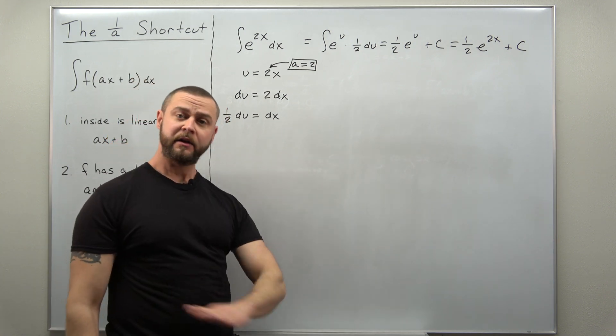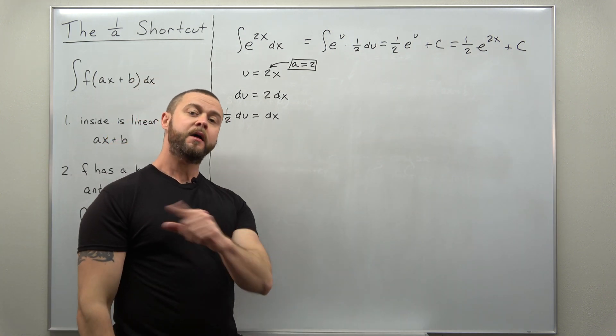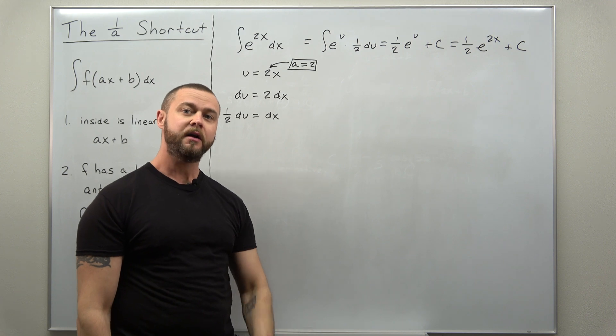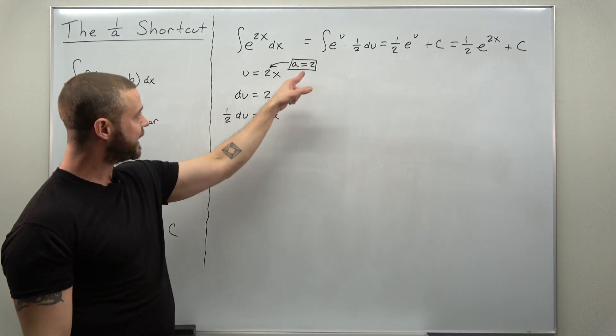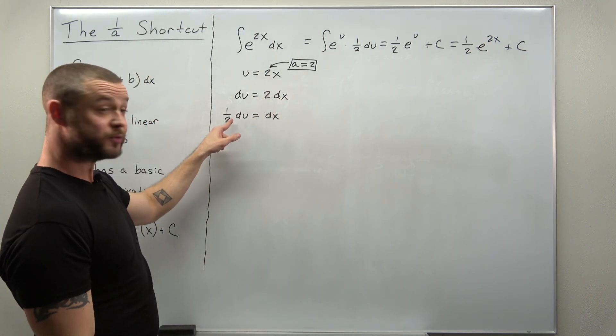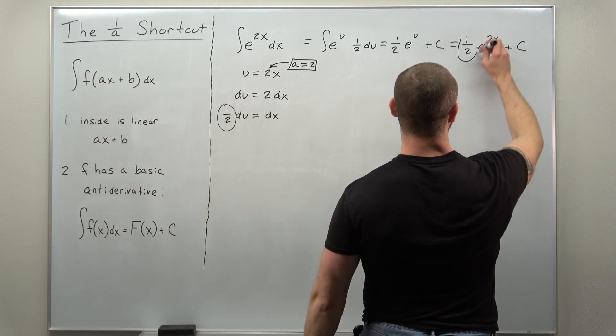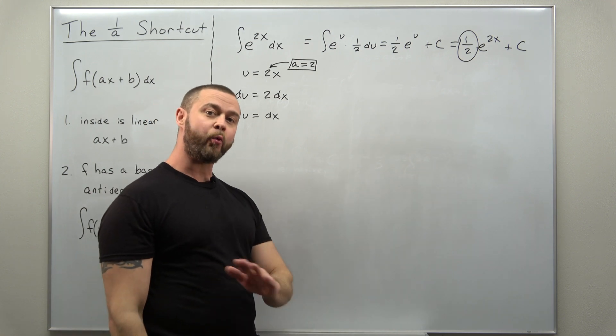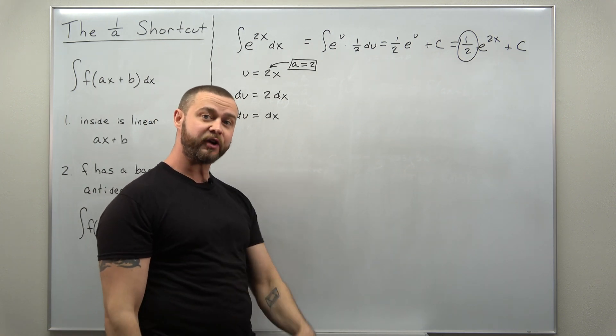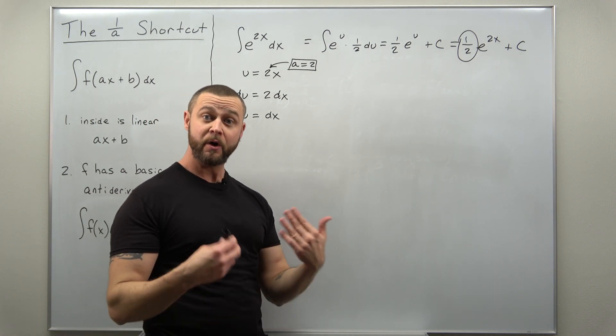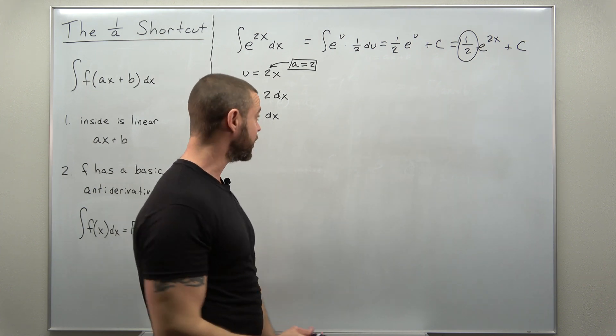So that's complete u substitution. Here the 1 over a shortcut, we basically just take a look at our value for a and notice with the substitution we get a 1 over a factor. Now this will cut down the work especially if you start combining substitution with another method like integration by parts.